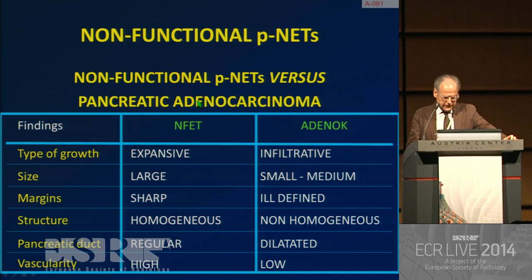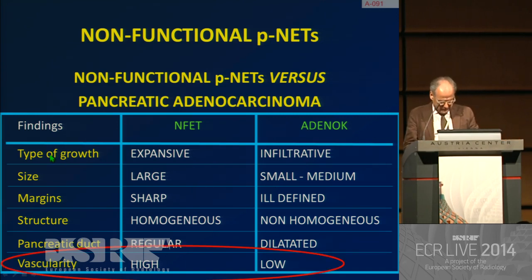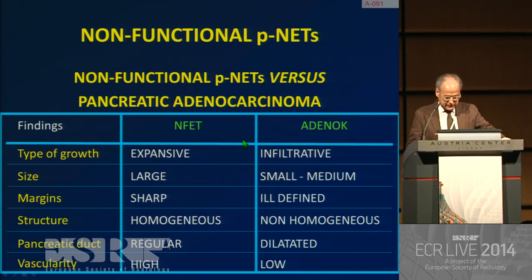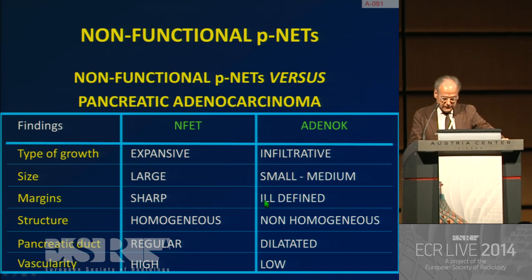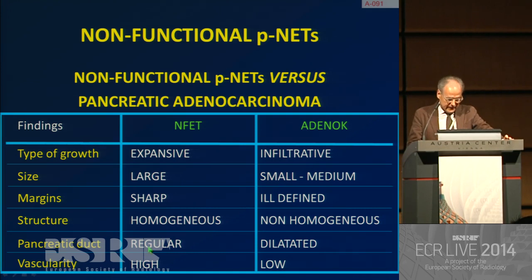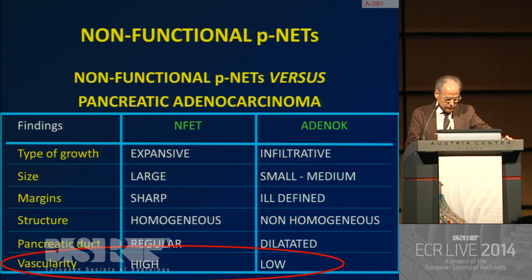The key point is the differential diagnosis between non-functional PNETs versus pancreatic adenocarcinoma. There are a number of features concerning the type of growth, which is expansive in the case of neuroendocrine tumor, while it is infiltrative in the case of adenocarcinoma. The size is large in general, compared to the small-medium size of adenocarcinoma. Margins are relatively sharp versus ill-defined in adenocarcinoma. Structure is more homogeneous. The pancreatic duct is generally not involved, so not dilated. And the last one: vascularity.